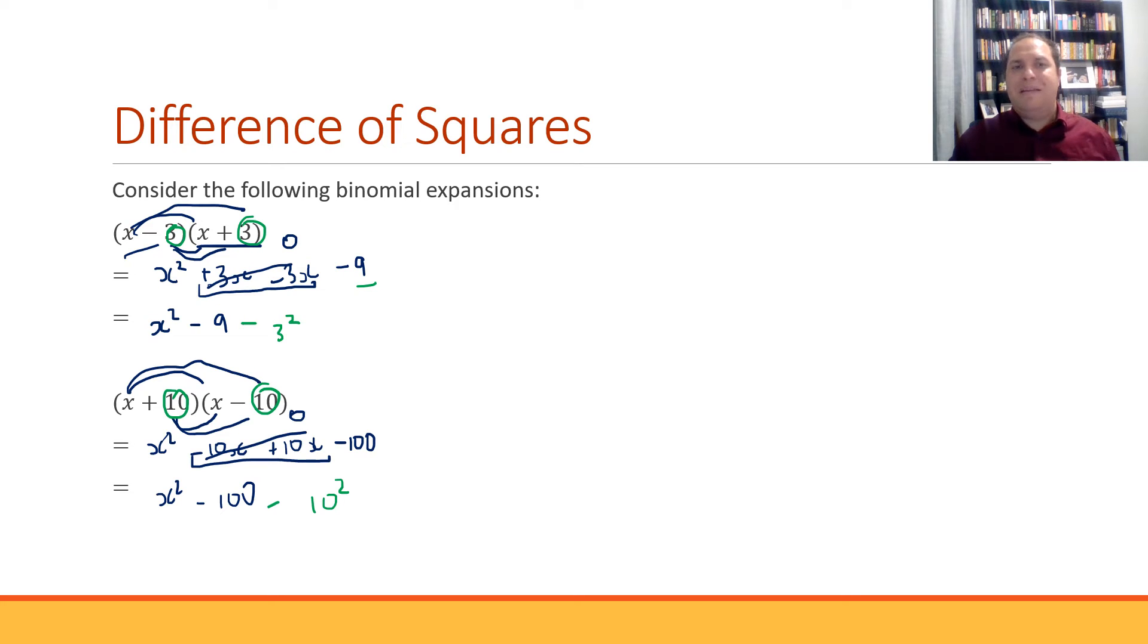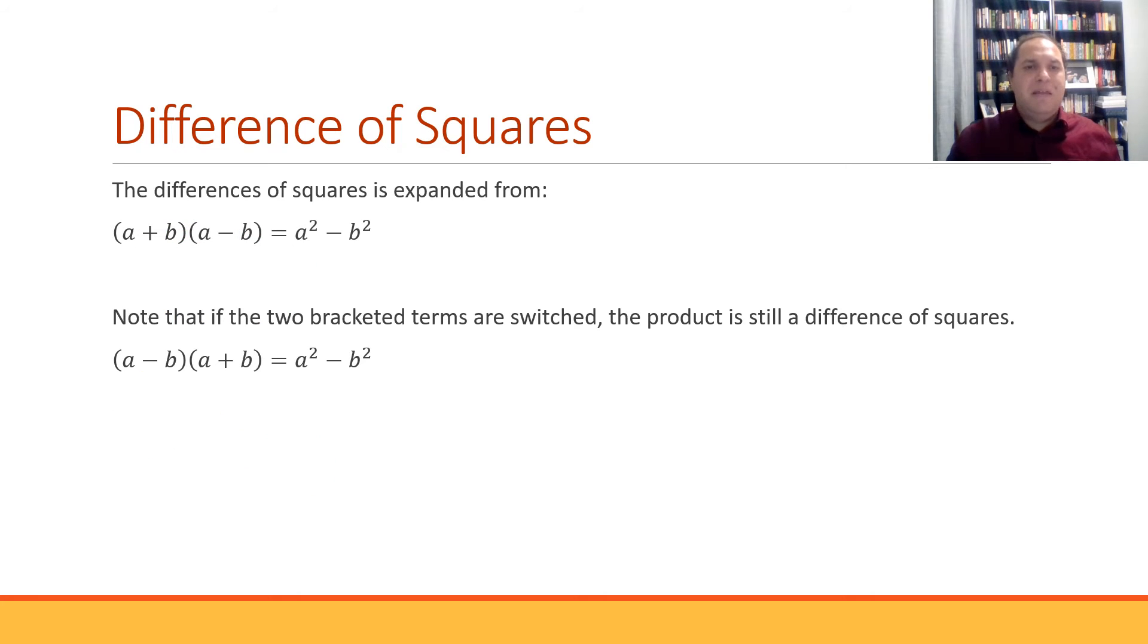So there is some sort of a pattern here that we can use when we've got expressions like this, where you've got something plus something times something minus something, or if those are switched around. And that rule is this one. The difference of squares in expanded form says, if you've got a plus b, something plus something, then times by something minus something, when you expand it, you end up getting a squared minus b squared. And this is our difference because it's subtraction. Difference means subtraction. Difference of squares. And that's where the name comes from.